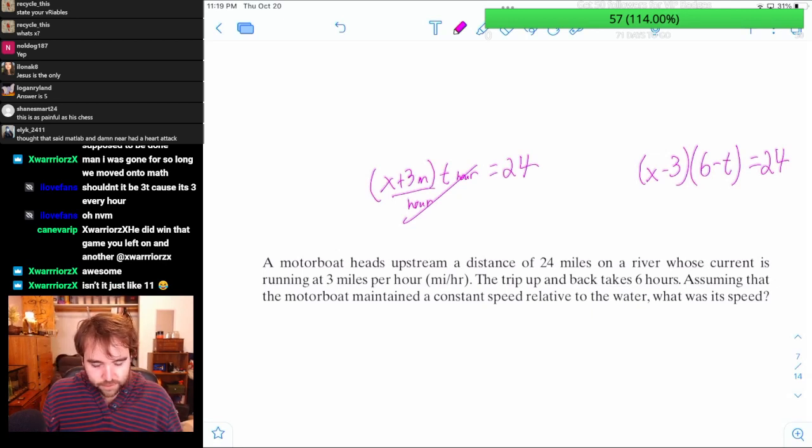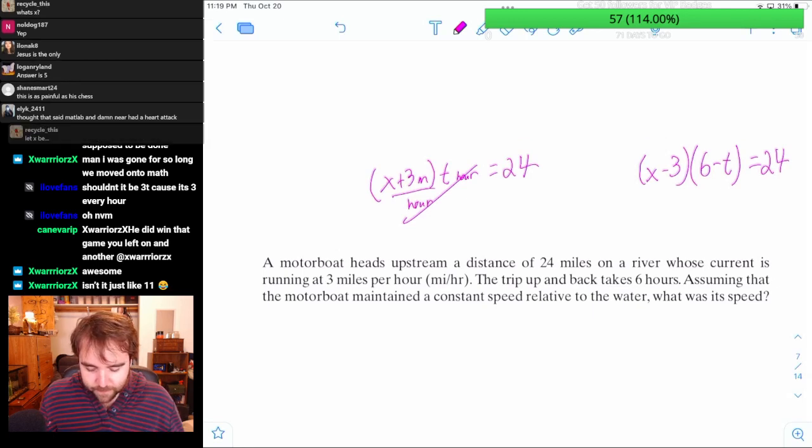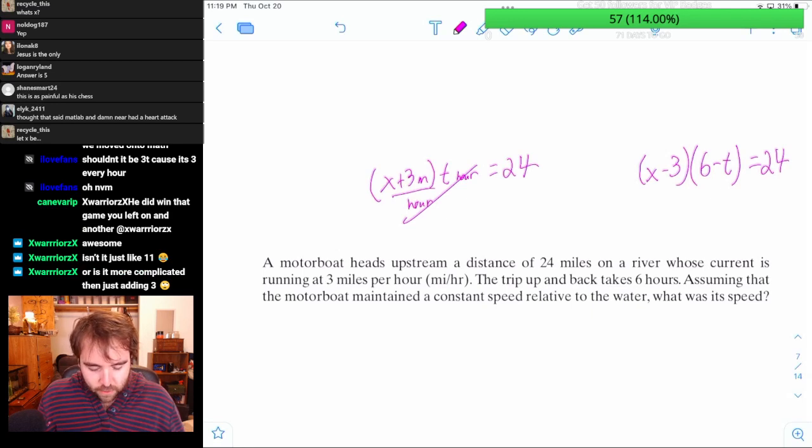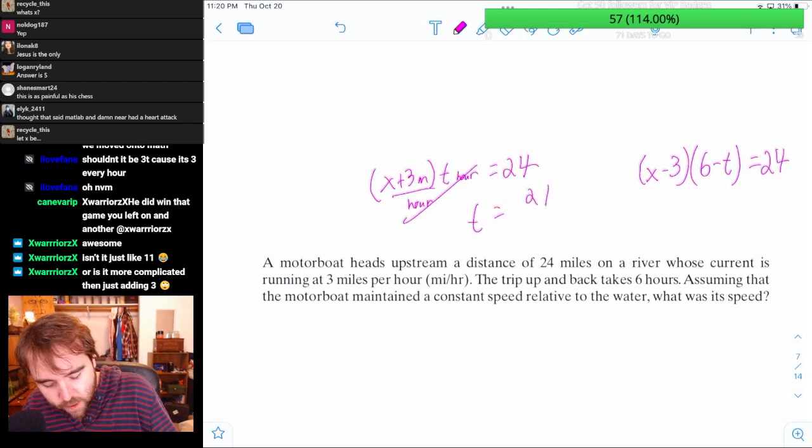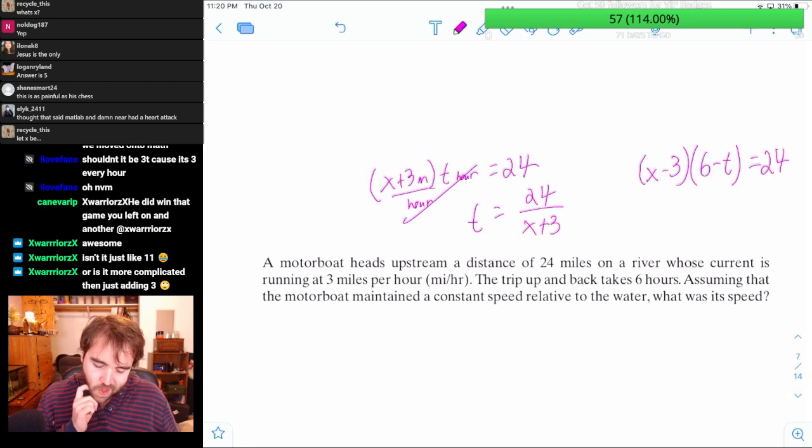Now what? I've got no more substitutions to do. But I've got two equations and two solutions, so I should be able to solve for them decently. There's no division I can do right now. So I'm tempted to just say that T is 24 over X plus 3, and then plug that in for T.